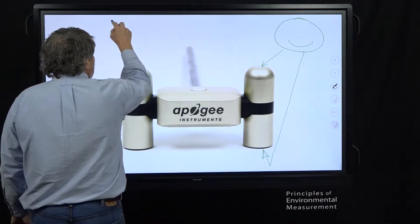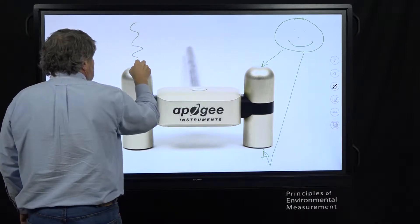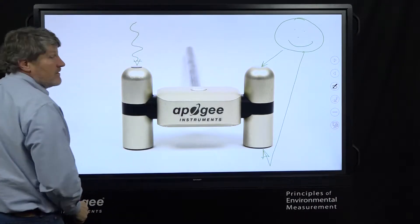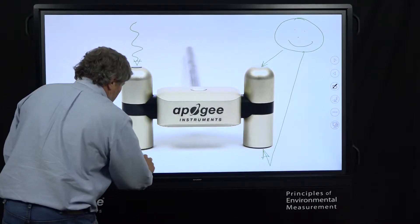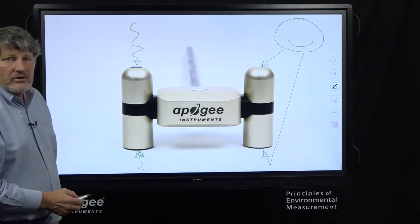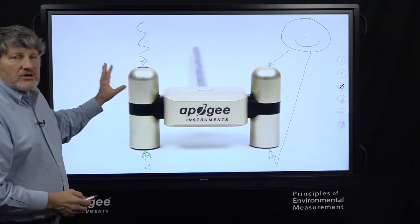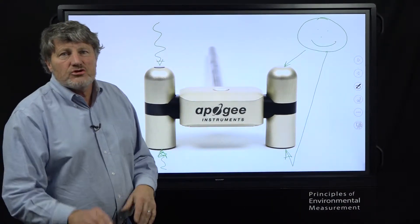Then we have longwave radiation from the sky coming in here measured here and longwave radiation from the soil here. That's a four component net radiometer, four separate measurements coming out to the instrument.